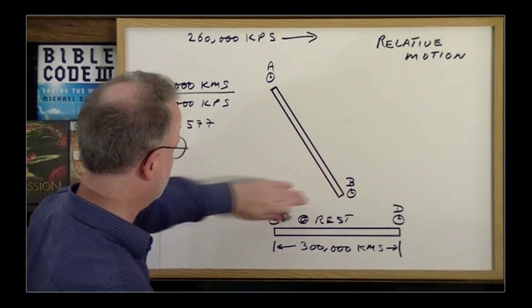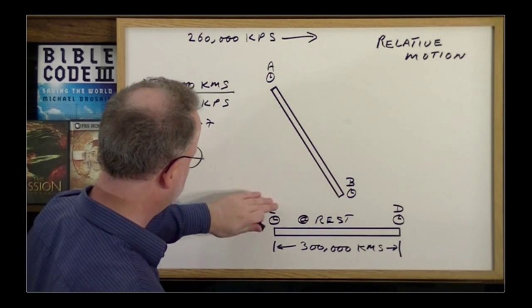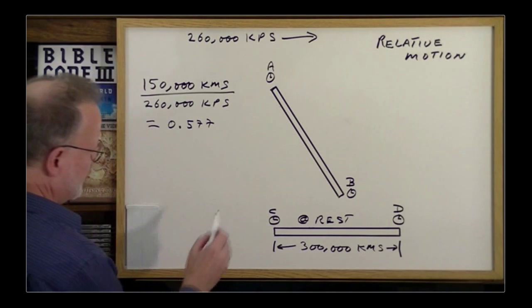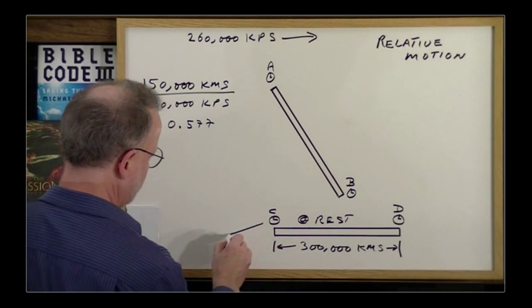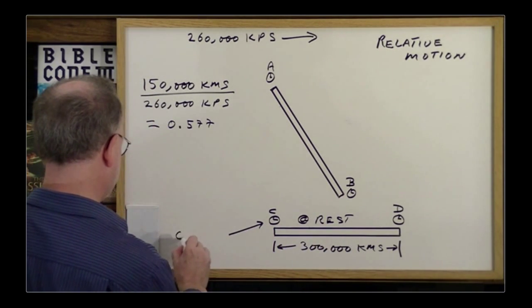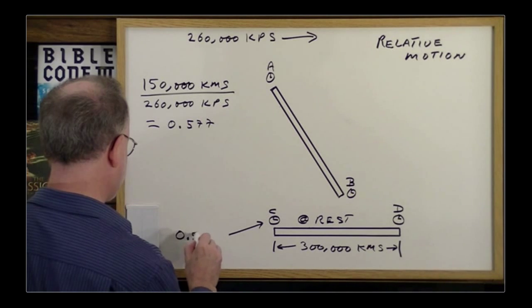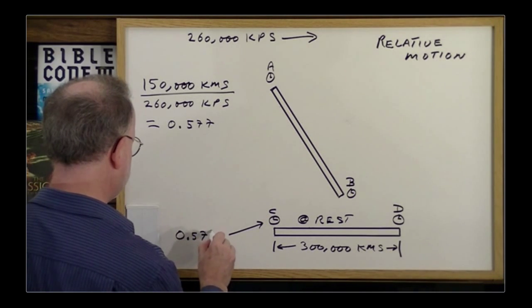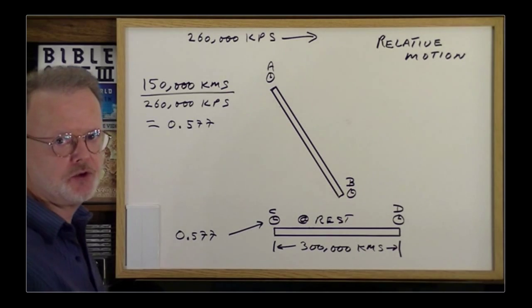You divide that by 260 kps, 260,000 kps, which tells you that it took a time period of 0.577 seconds for B to move from here to there. Therefore, since this clock is at rest, it would have indicated that a time period of 0.577 seconds had passed.